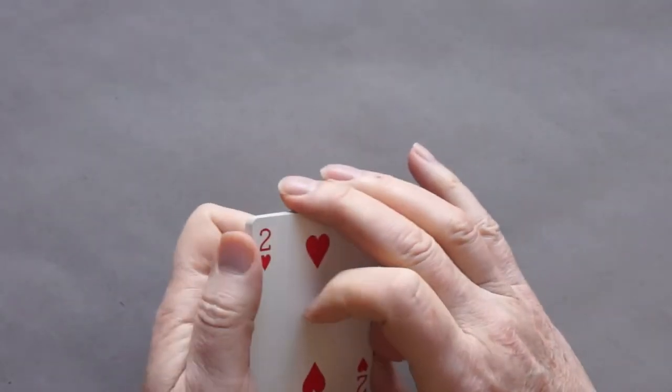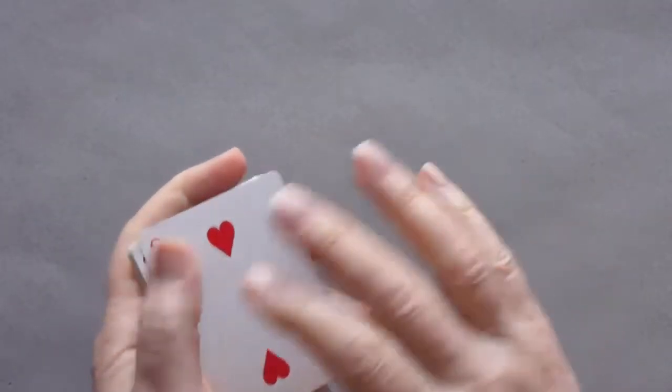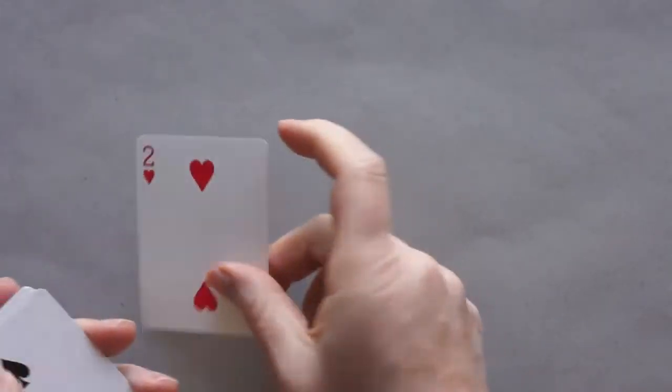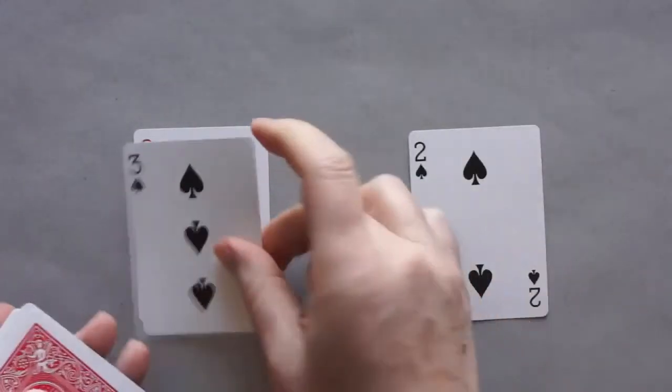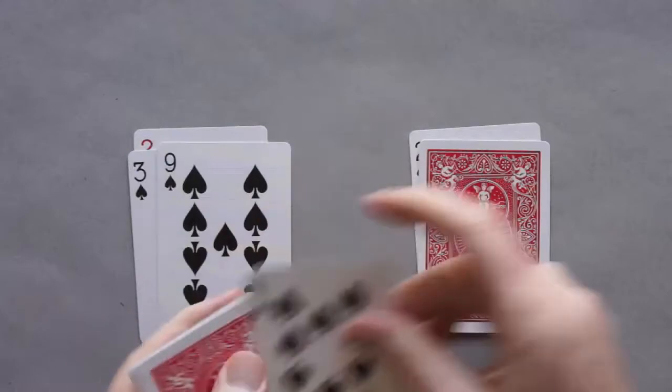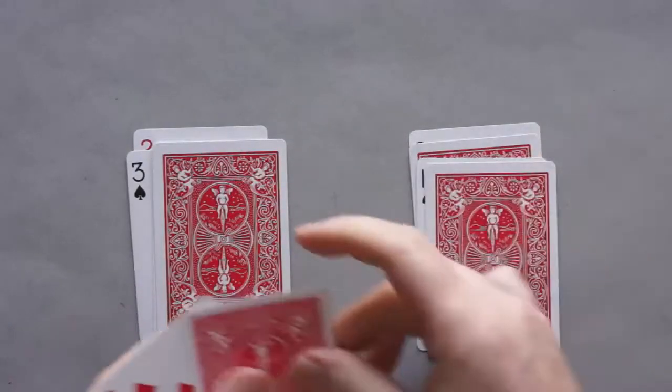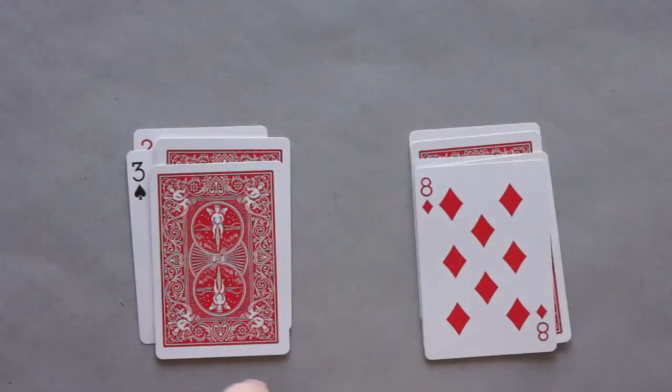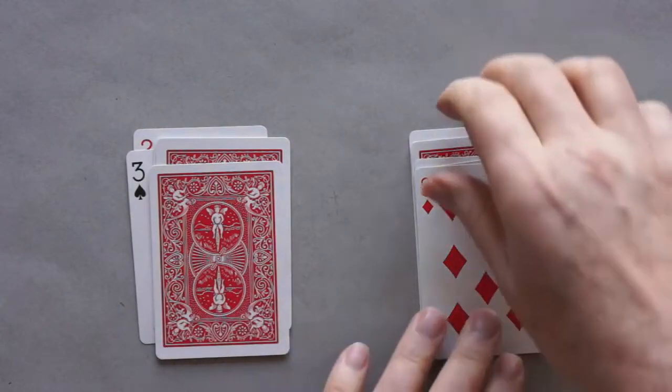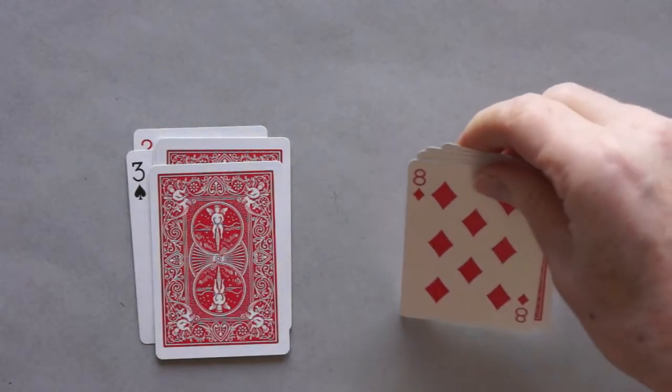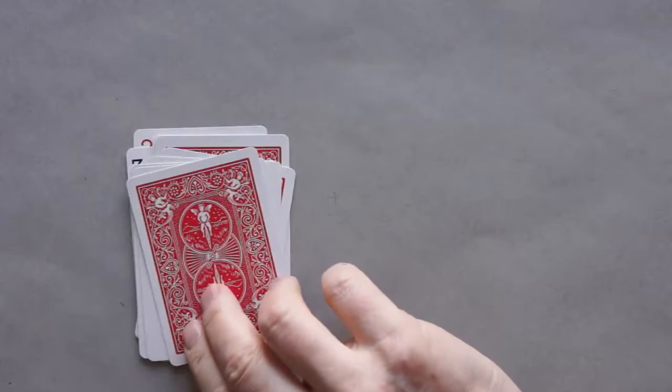When you're all done doing that, you're going to deal the cards into two piles, left and right, like this. Now you'll see some are face-up, some are face-down. The last step is to take either pile and turn it over and drop it on the other pile.